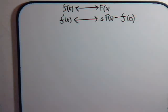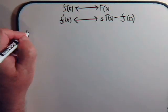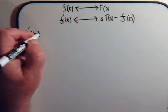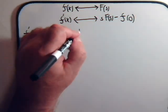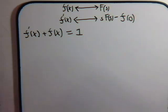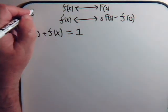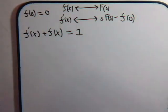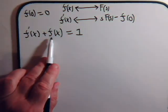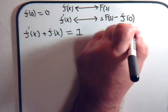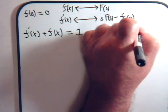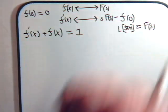Now let's use this information to solve a differential equation. Suppose we have this equation: f prime of x plus f of x equals 1, and we're provided with the information that f of zero equals 0. We do not know what f of x is, and if we don't know what f of x is, we certainly don't know what its Laplace transform is. So for the Laplace transform of f of x, all we can say is it's going to be equal to some function of s.